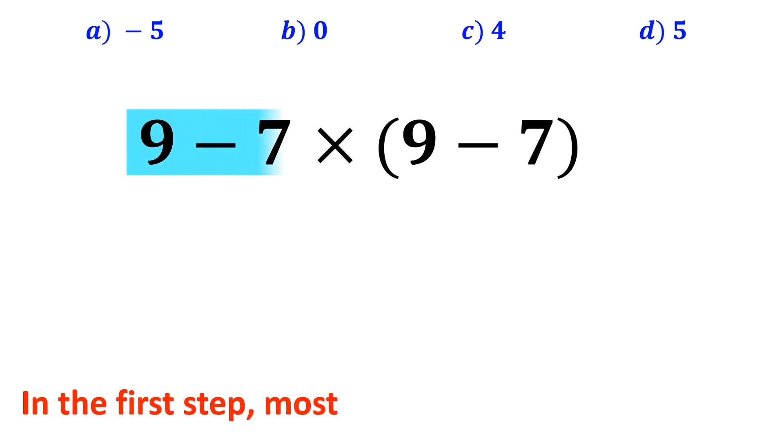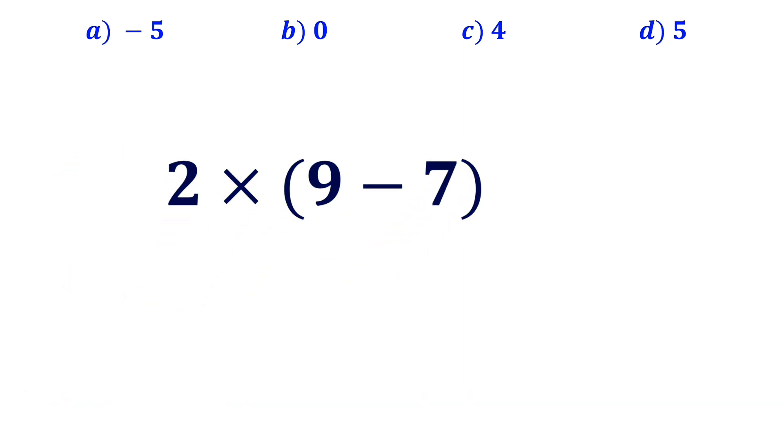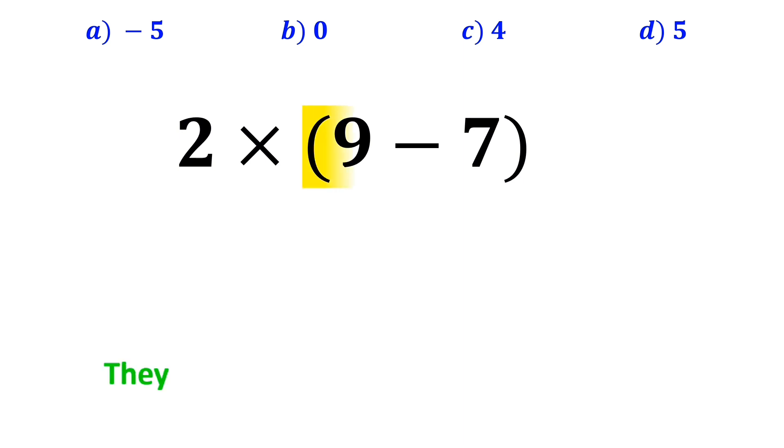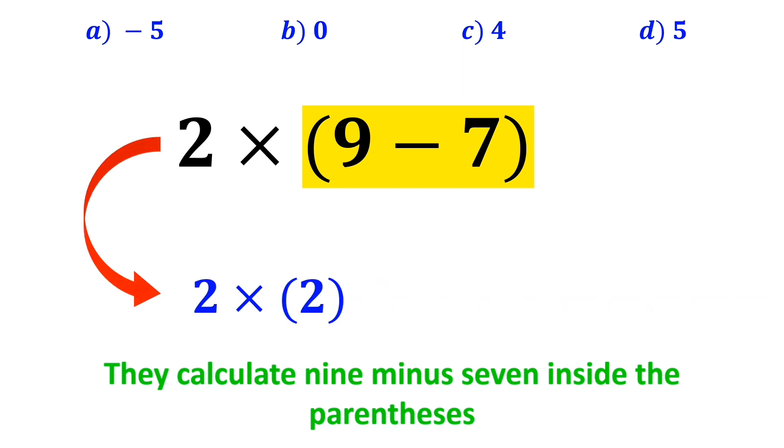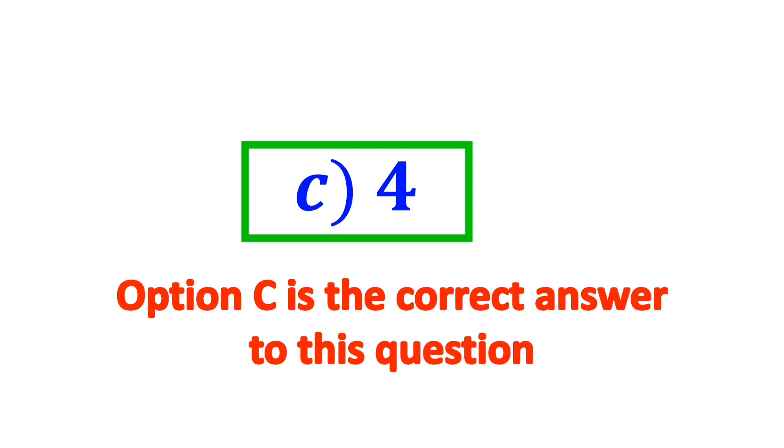In the first step, most people do 9 - 7, which I've highlighted in yellow. So it becomes 2 × (9 - 7). In the next step, they calculate 9 - 7 inside the parenthesis, which becomes 2 × 2. Finally, the answer becomes 4. Then, without hesitation, they quickly say that option C is the correct answer to this question.